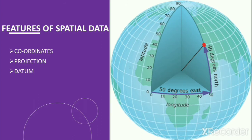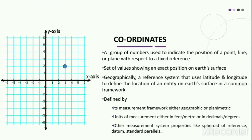The spatial data generally possesses three characteristic features that define it: coordinates, projection, and datum. Coordinates are a group of numbers used to determine the position of an entity in a space of given dimension with respect to a fixed reference or system of lines. Coordinates are a set of values that shows an exact position on the surface of the earth. In geography, a coordinate system is a reference system that uses latitudes and longitudes to represent the location of an entity within a common geographic framework.